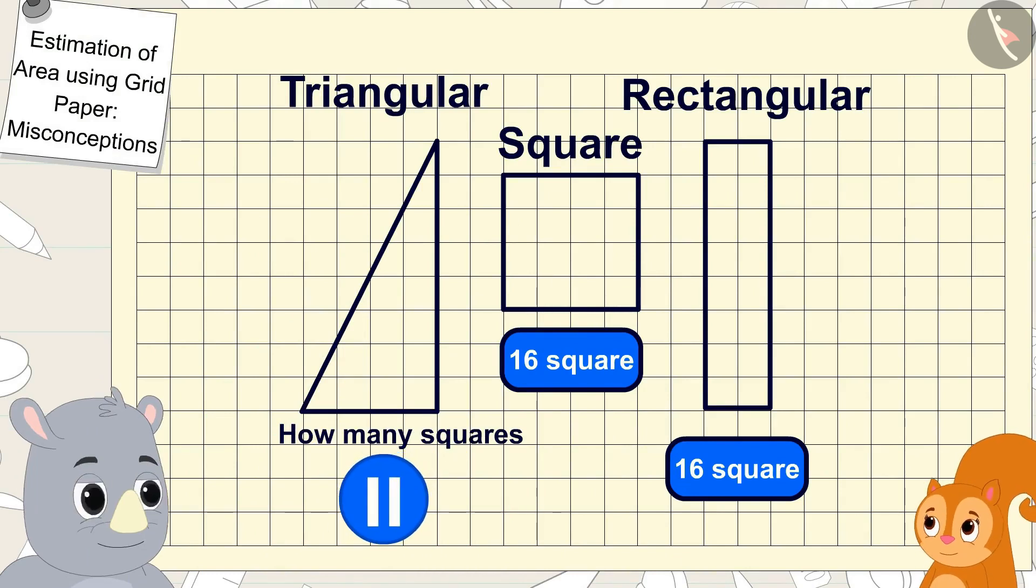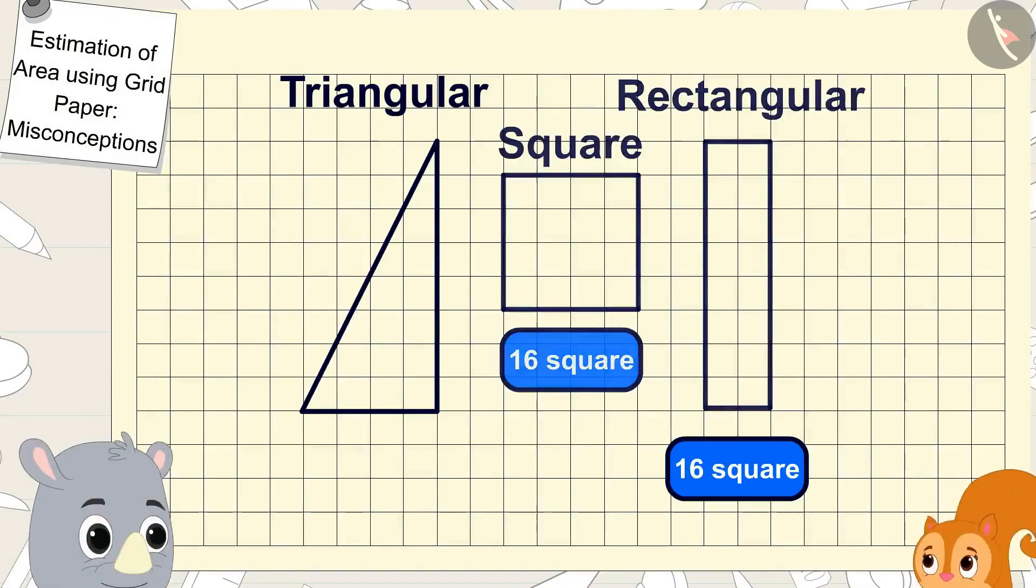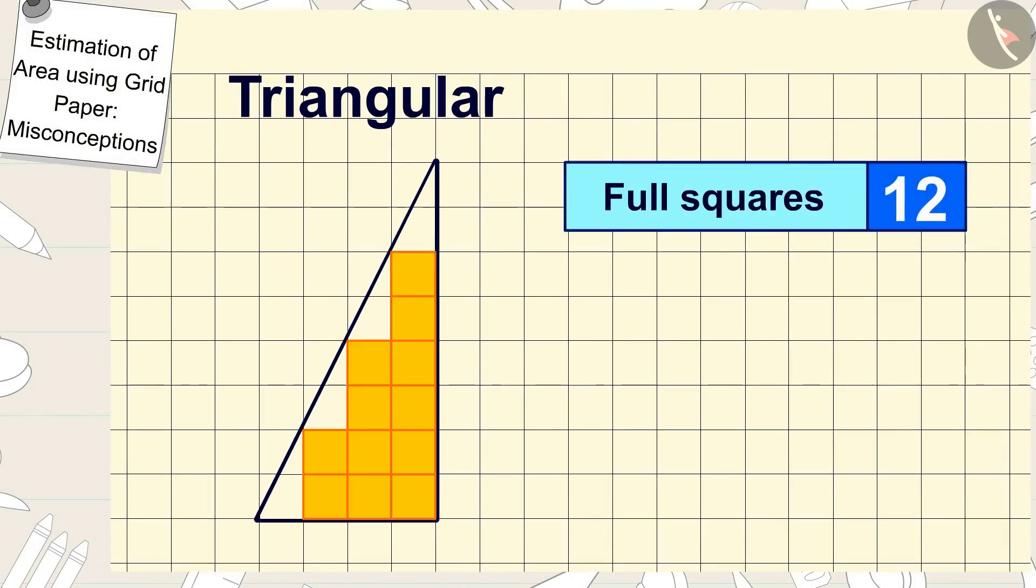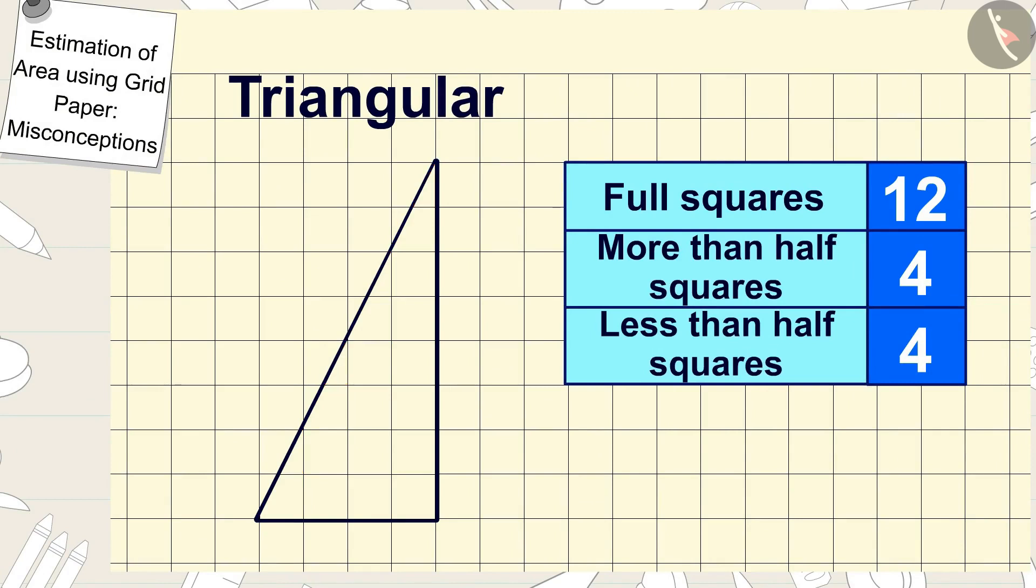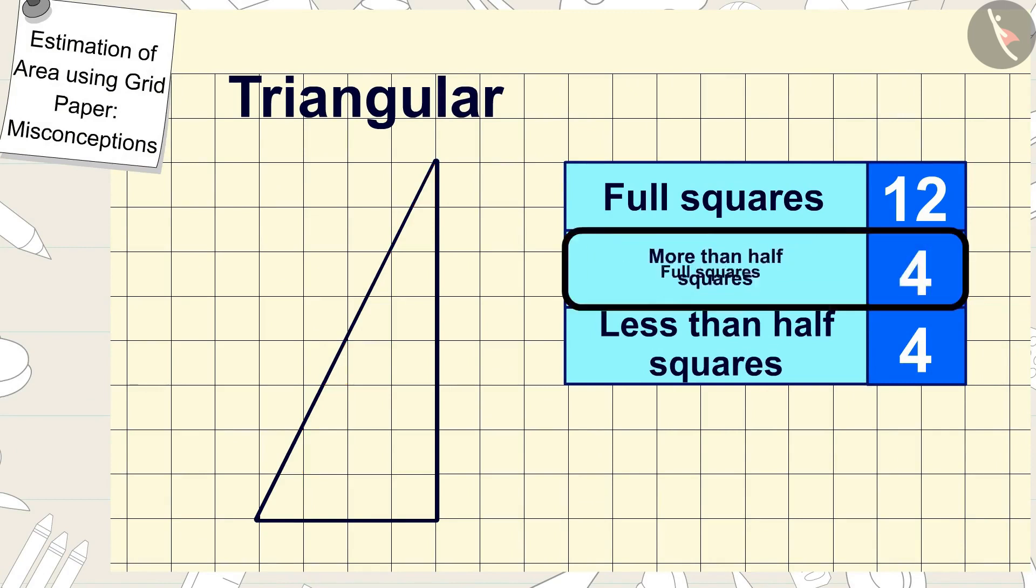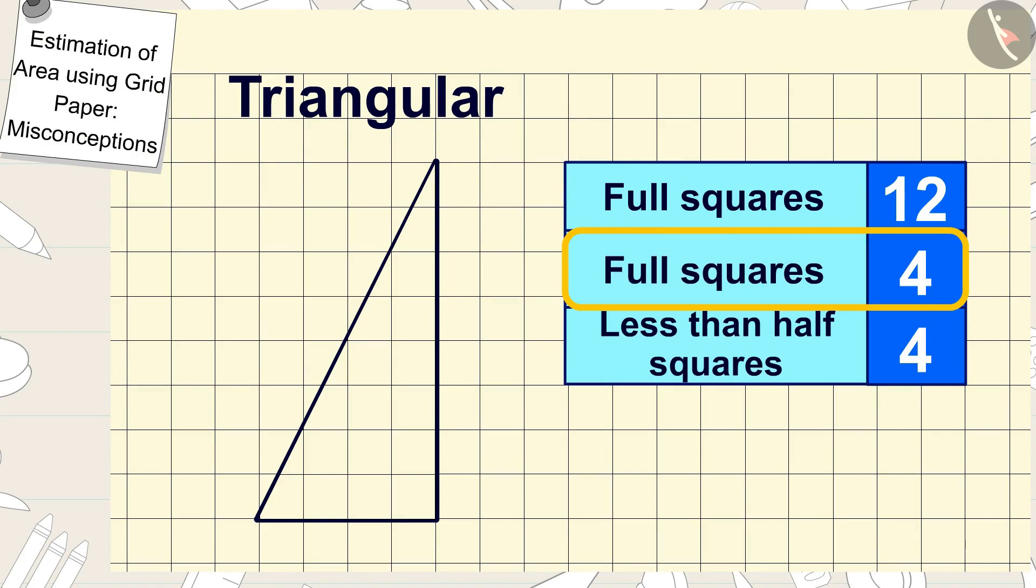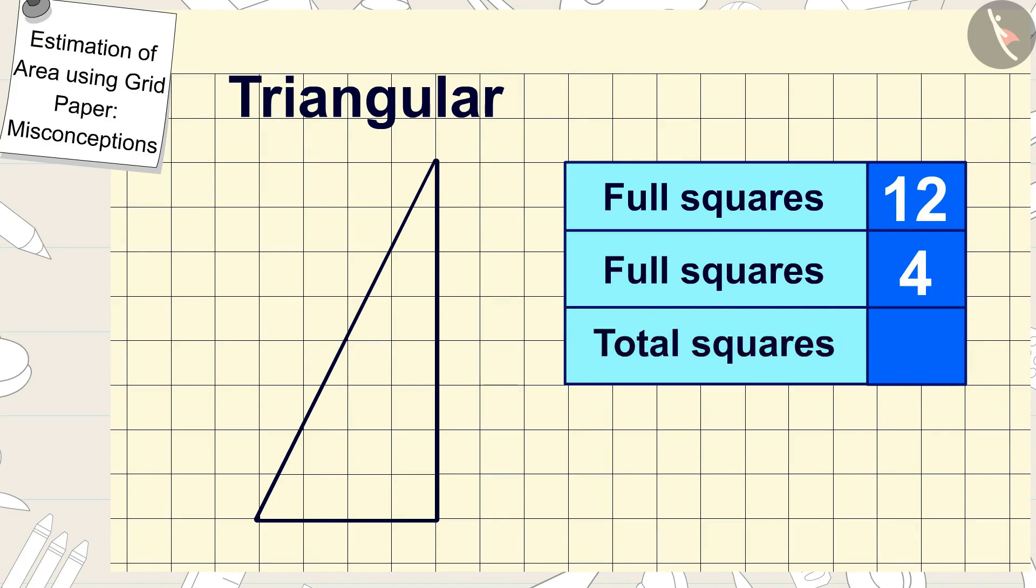There are 12 full squares in the area of the triangle shaped plate. There are four more than half squares and four less than half squares, so we will count four more than half squares as four full squares and we don't count the less than half squares. In this way, there are 16 squares in the area of the triangle shaped plate.